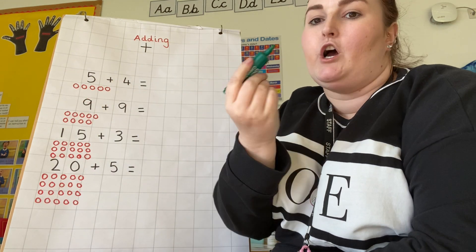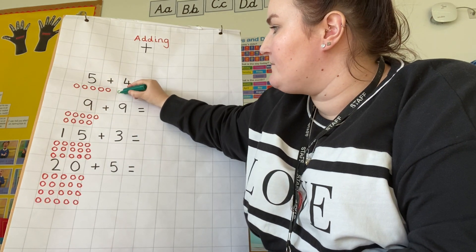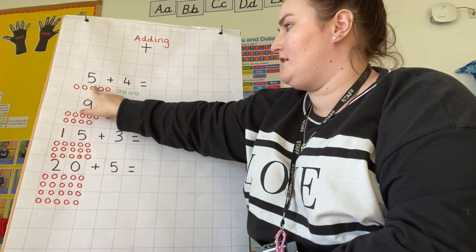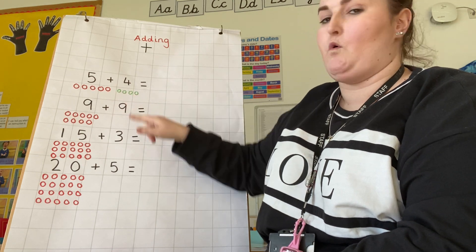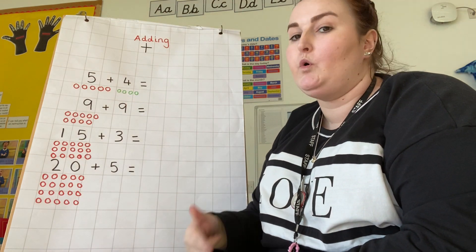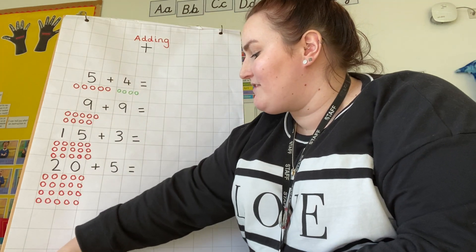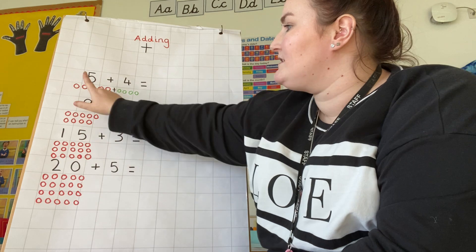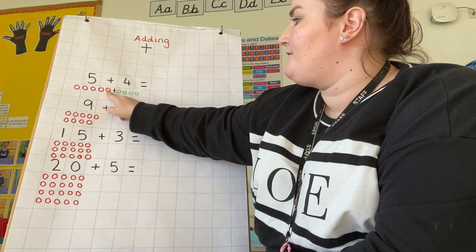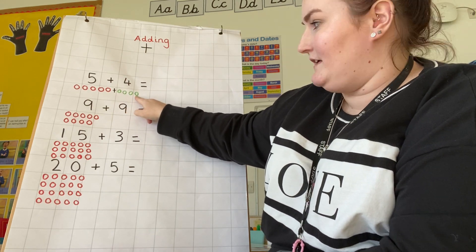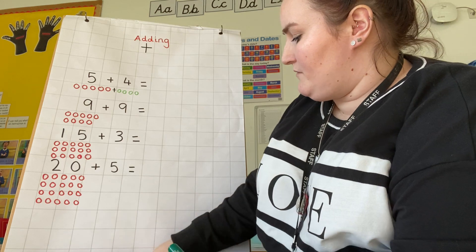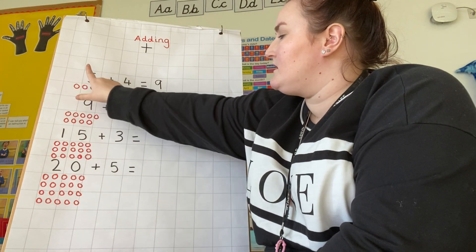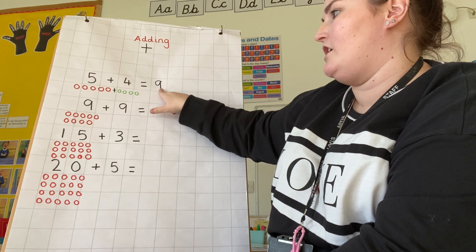Now I need to add four, which means I need four more counters. I'm going to get a different color for these counters and represent that number — four. So I've represented my number five: one, two, three, four, five; and my number four: one, two, three, four. Now we're going to count how many we've got altogether, because I'm adding these two numbers together. Counting: one, two, three, four, five, six, seven, eight, nine. I write the answer with my black pen after my equals sign: five add four equals nine.